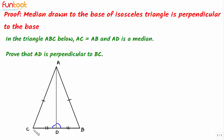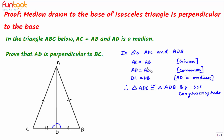Now let's solve this formally. In triangles ADC and ADB: AC equals AB (given), AD equals AD (common side), and DC equals DB because AD is the median. Therefore, triangle ADC is congruent to triangle ADB by the SSS congruency rule.